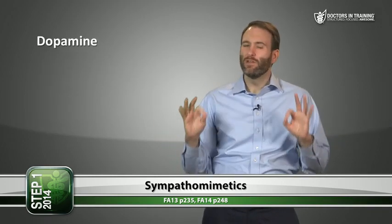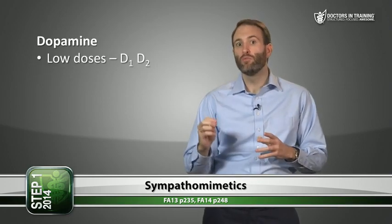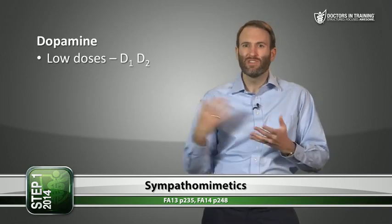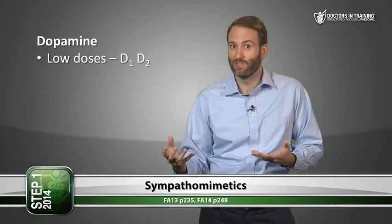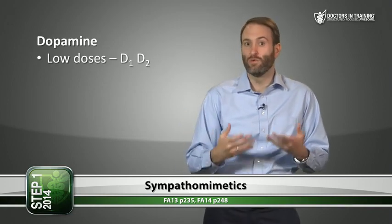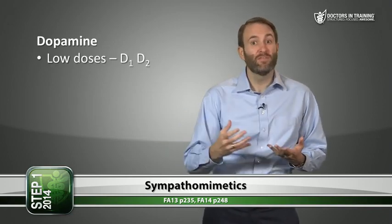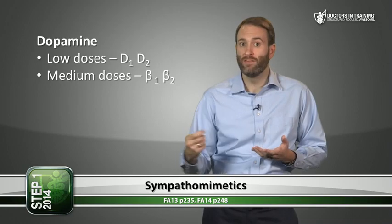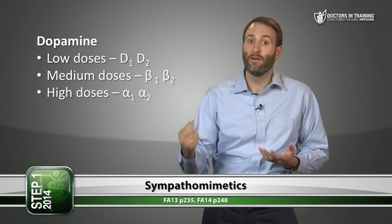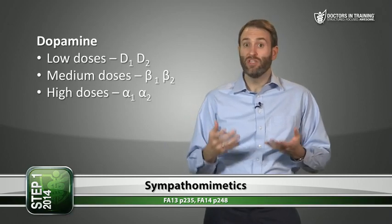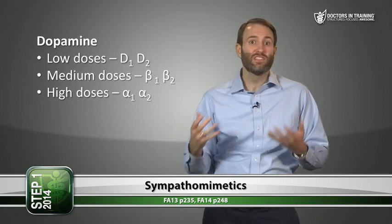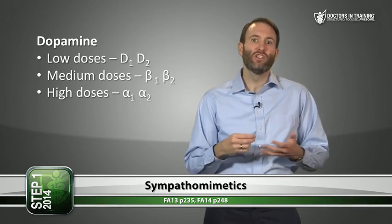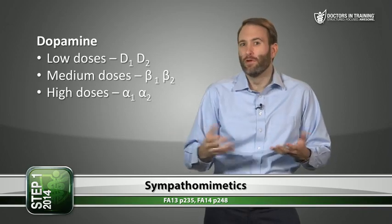Dopamine is a bit more complicated. At low doses it stimulates dopamine receptors — including those in blood vessels and the kidney, not just the CNS. At medium doses it stimulates beta-1 and beta-2; at high doses it stimulates alpha-1 and alpha-2. Dopamine can be used in shock, and while it was thought that stimulating kidney dopamine receptors might help renal perfusion, studies have shown it actually doesn't improve renal function much.